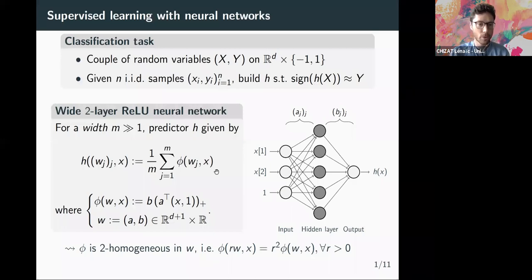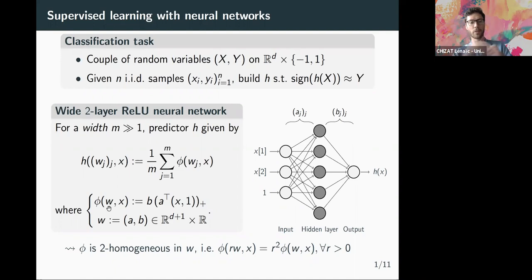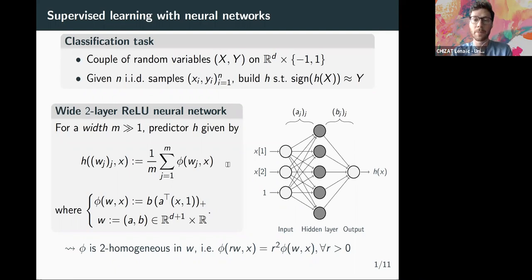We consider wide two-layer ReLU neural networks. The function class consists of predictors which are a sum of simple functions phi of w_j times x, where each phi is a simple value function — a composition of a linear function of the input, a ReLU nonlinearity, and a multiplication by a scalar. Each simple function has parameters a and b, the input and output weights, stacked in vector w. The predictor is a sum of m simple functions with scaling 1/m, useful in the limit as m goes to plus infinity.